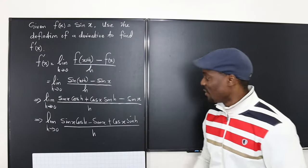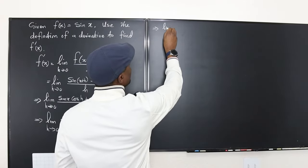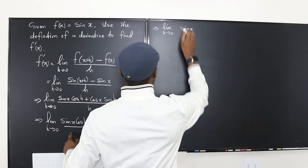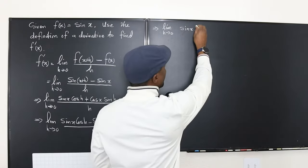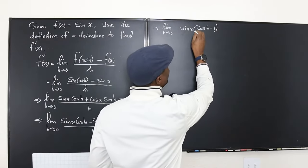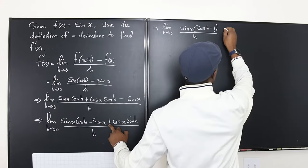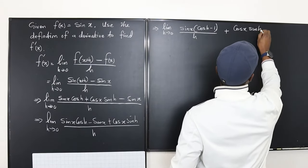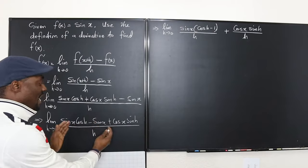Let's factor sine x out and see what we have. This is going to be the limit as h goes to 0 of sine x times (cosine h minus 1) over h, plus cosine x times sine h over h. That's the expression you get once you factor and split at the plus sign.